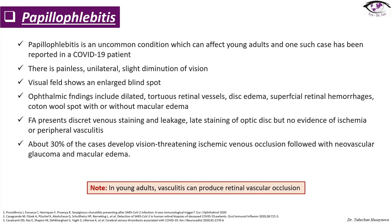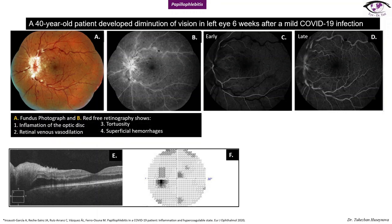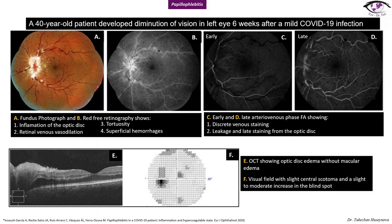In young adults, vasculitis can produce retinal vascular occlusion as well. Here is the case of a 40-year-old patient who developed decreased visual acuity in the left eye six weeks after mild COVID-19 infection. Photos A and B show fundus photographs revealing inflammation of the optic disc and retinal venous vasodilation; red-free retinography shows tortuosity and superficial hemorrhages. In photos C and D, early and late arteriovenous phase fluorescein angiography shows discrete venous staining with leakage and late staining from the optic disc. Images E and F show OCT revealing optic disc edema without macular edema, and the visual field shows a slight central scotoma and mild to moderate increase in the blind spot.